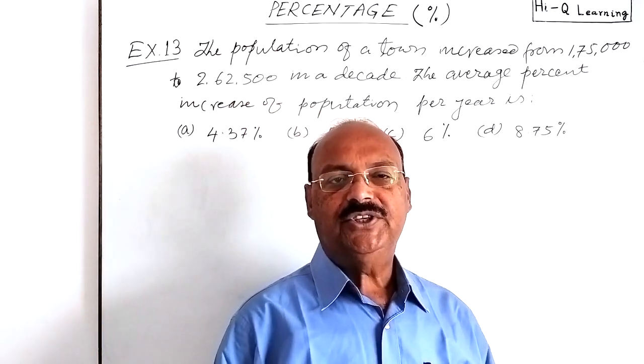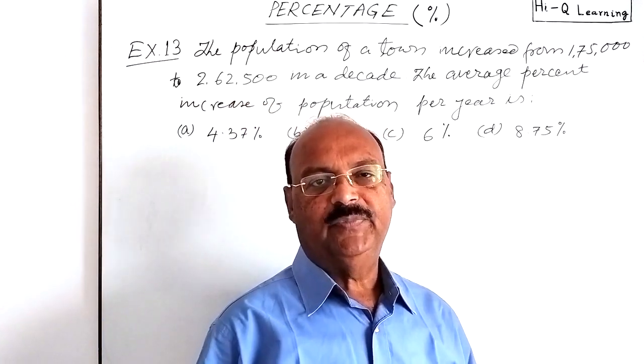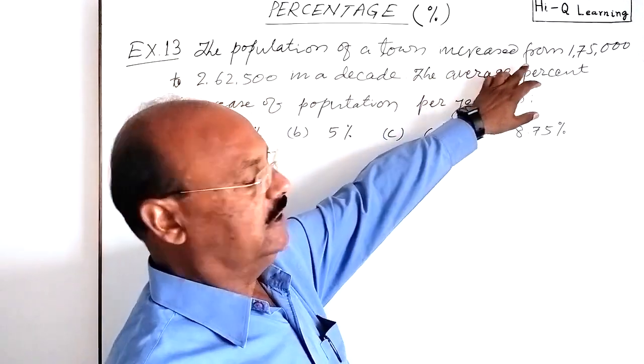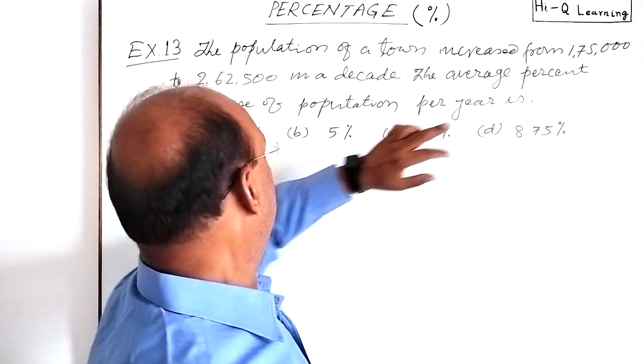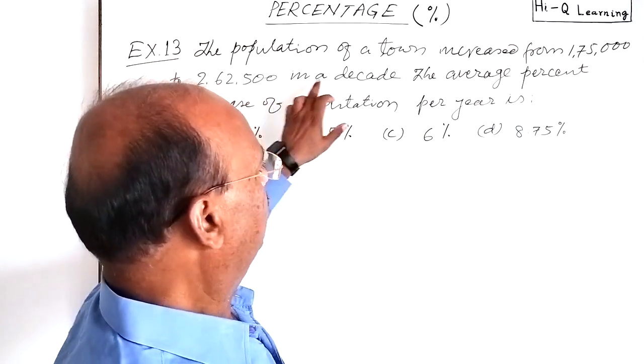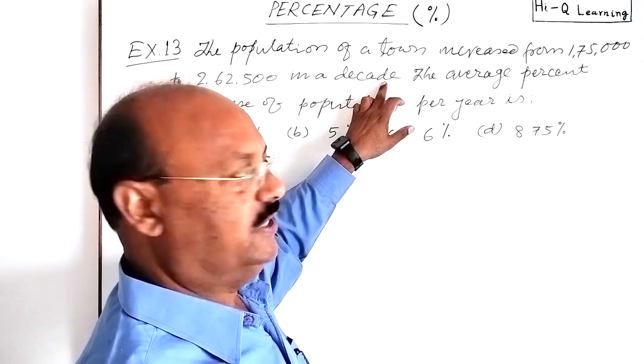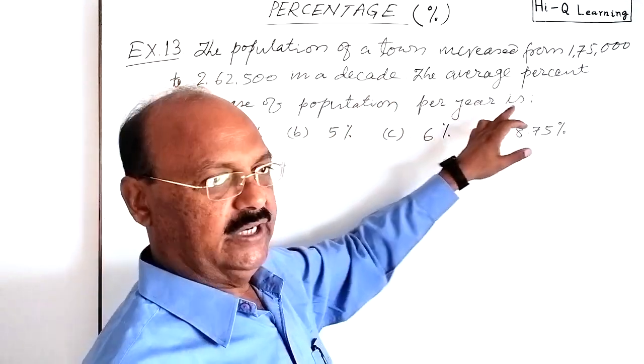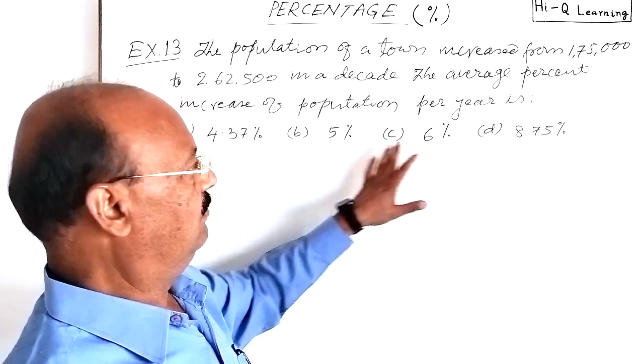Welcome students. Let us see a very important question from the topic percentage. The population of a town increased from 175,000 to 262,500 in a decade. Decade means 10 years. The average percent increase of population per year is...